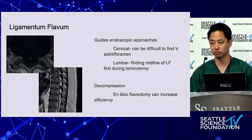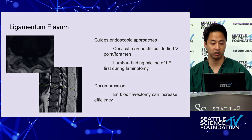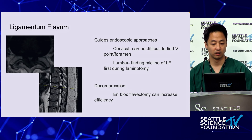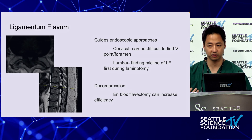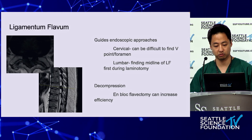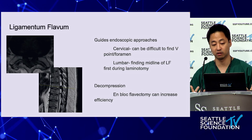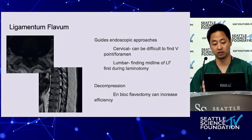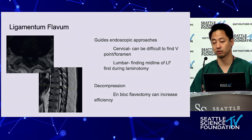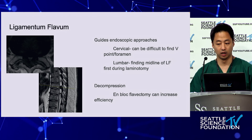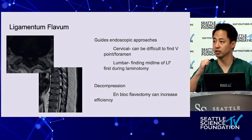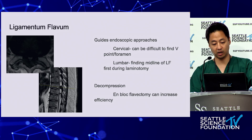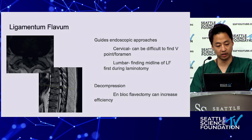One example: when I was doing posterior cervical foraminotomies, I used to get lost quite a bit because some patients with facet arthropathy make it difficult to find the V-point. So what I started doing was making a laminotomy window, finding the ligamentum flavum, and going out lateral. In lumbar spine, finding the midline raphé of the ligamentum flavum is a first step in laminotomy — that's what Dr. Hopster taught me. And doing ULBD-type cases, knowing the ligamentum flavum anatomy and doing an en-bloc flavectomy increases efficiency tremendously.